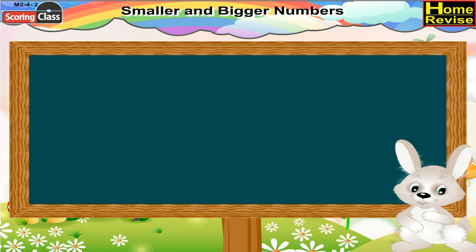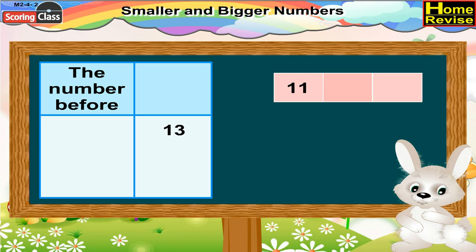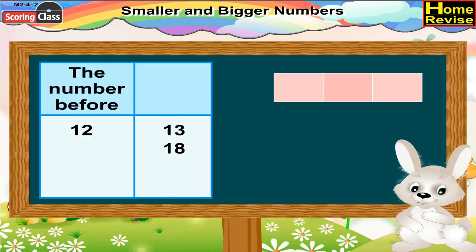Kids, I'll teach you a new concept. Let us find the number before. It's very simple. Let's start with 13. Can you tell me the number which comes before 13? Start counting from 11: 11, 12, 13. So, which number comes before 13? You are right — it's 12. Similarly, let us find out the number which comes before 18. Yes, it is 17.